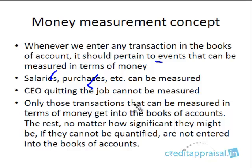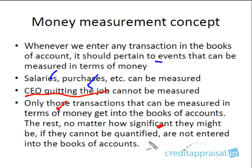We already discussed the case where an event cannot be measured in terms of money — for example, a CEO quitting the job. Irrespective of how successful that CEO is and how big an adverse impact the departure will have on the company, we will not be entering it into the books of account because we can't quantify it. Only transactions measurable in money terms enter the books; the rest, no matter how significant, do not. That is the money measurement concept.